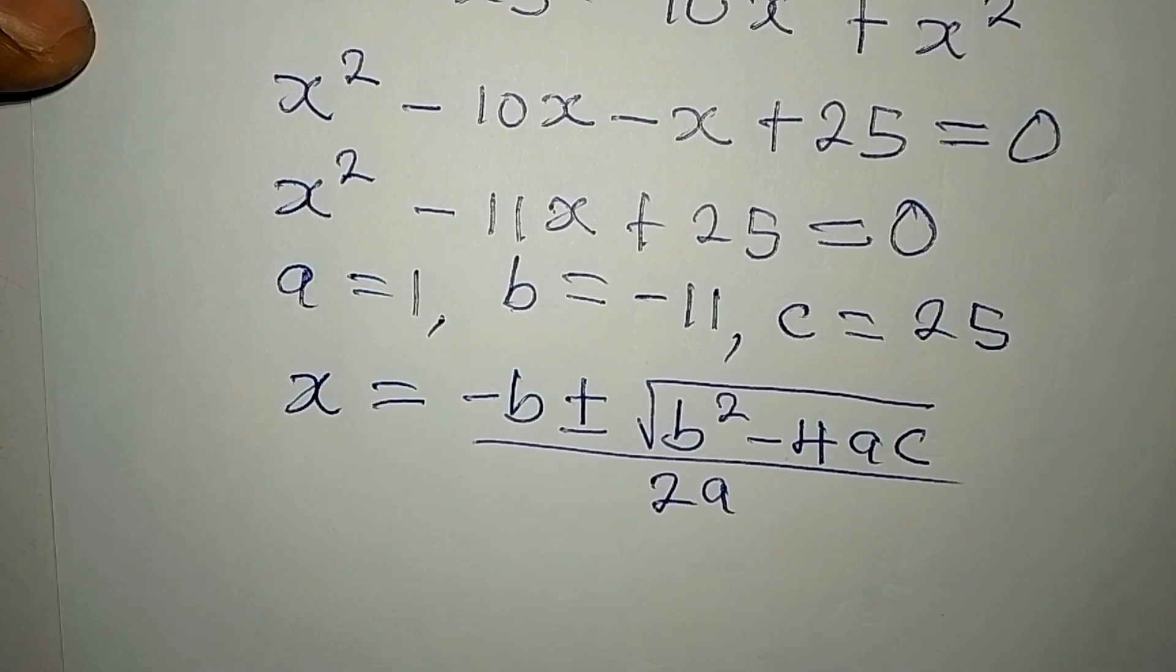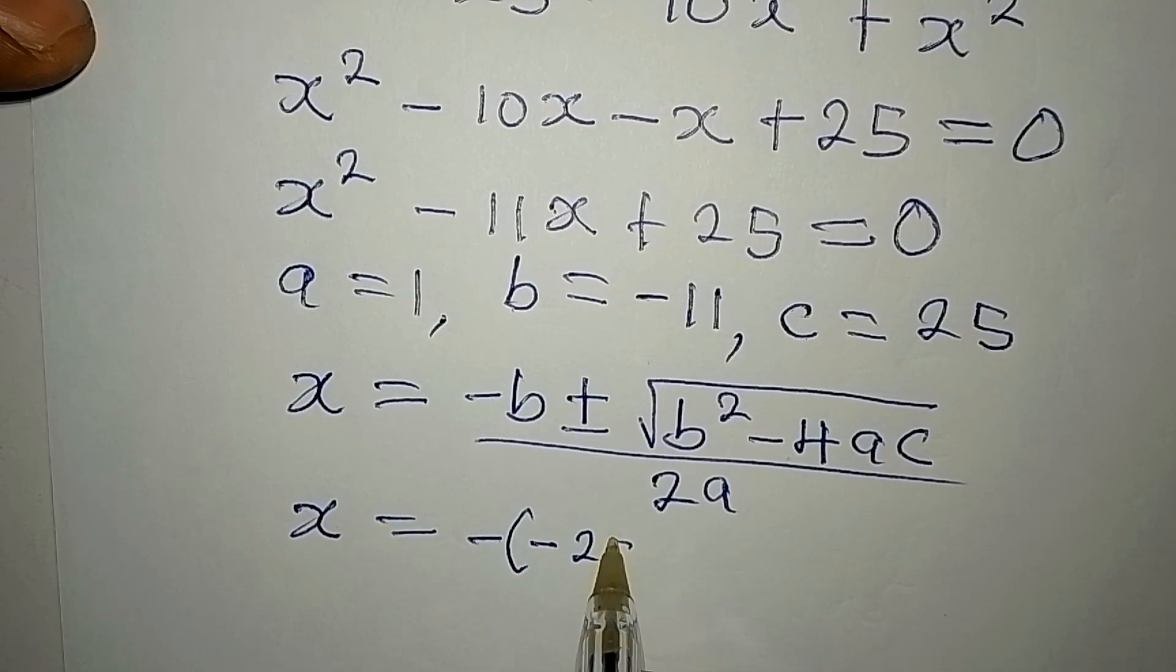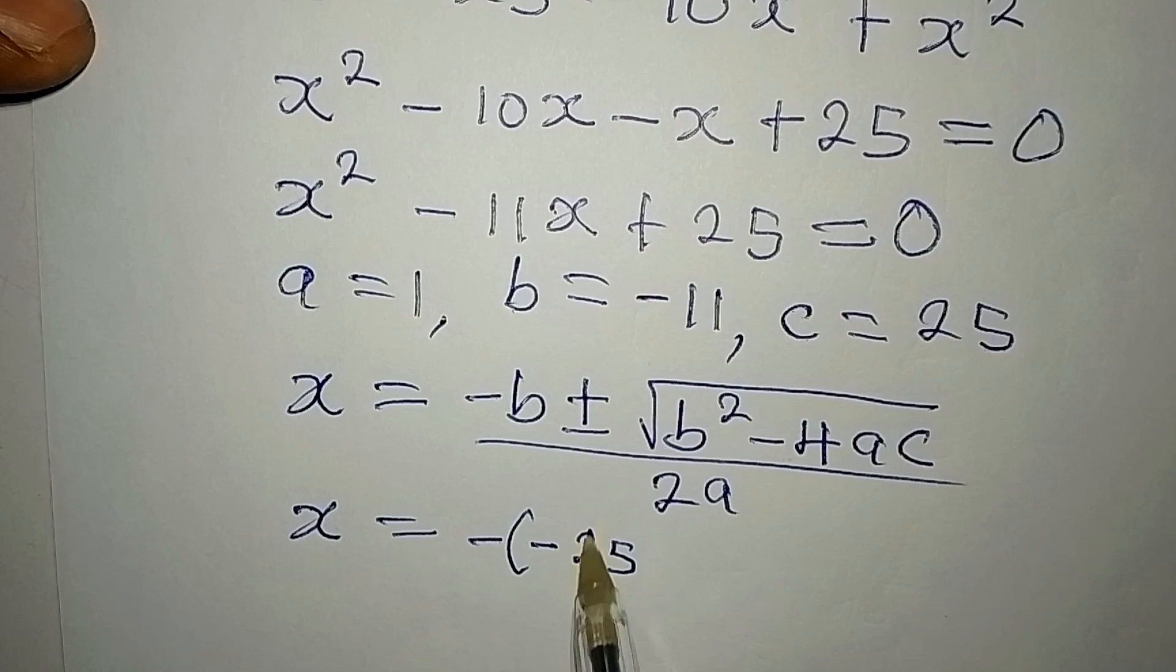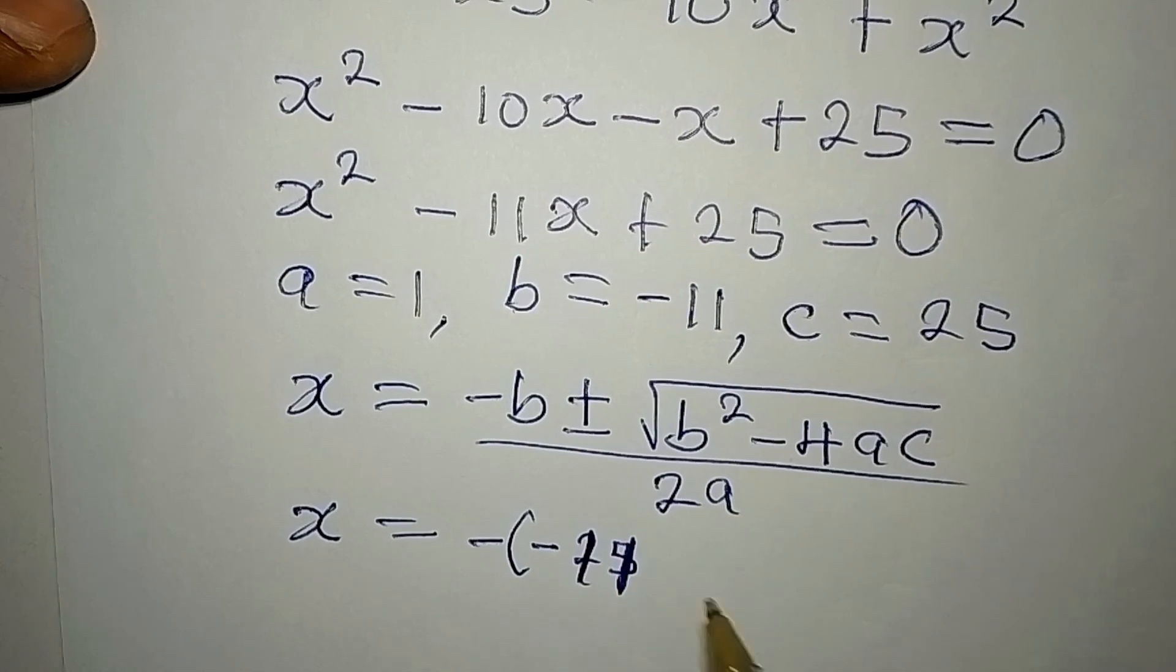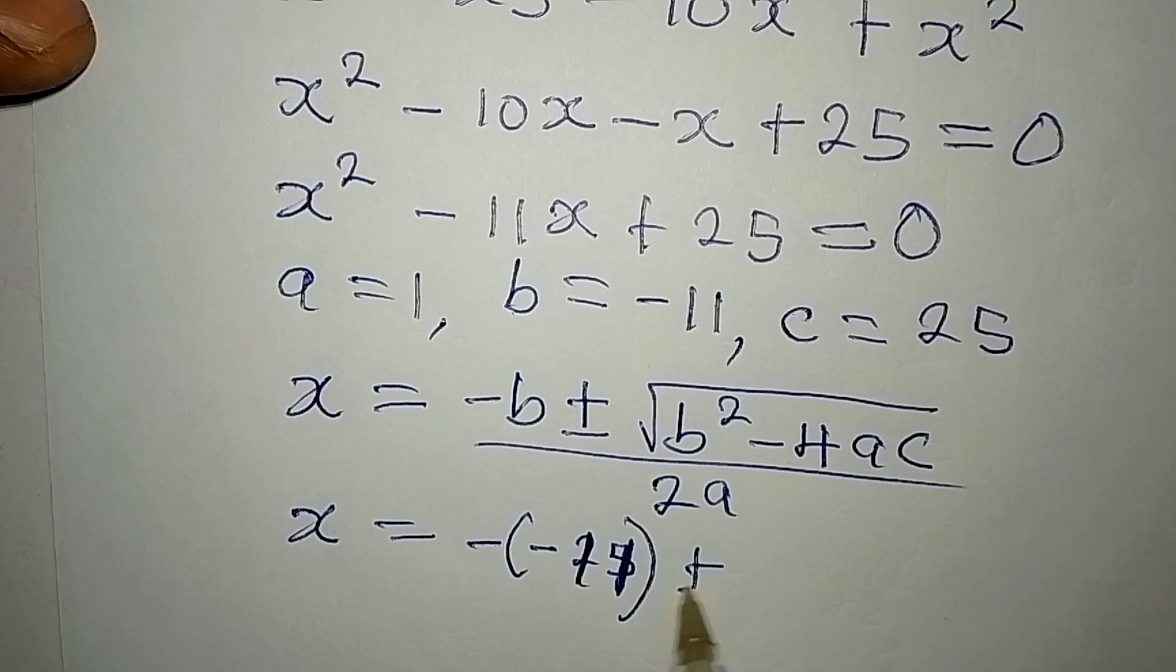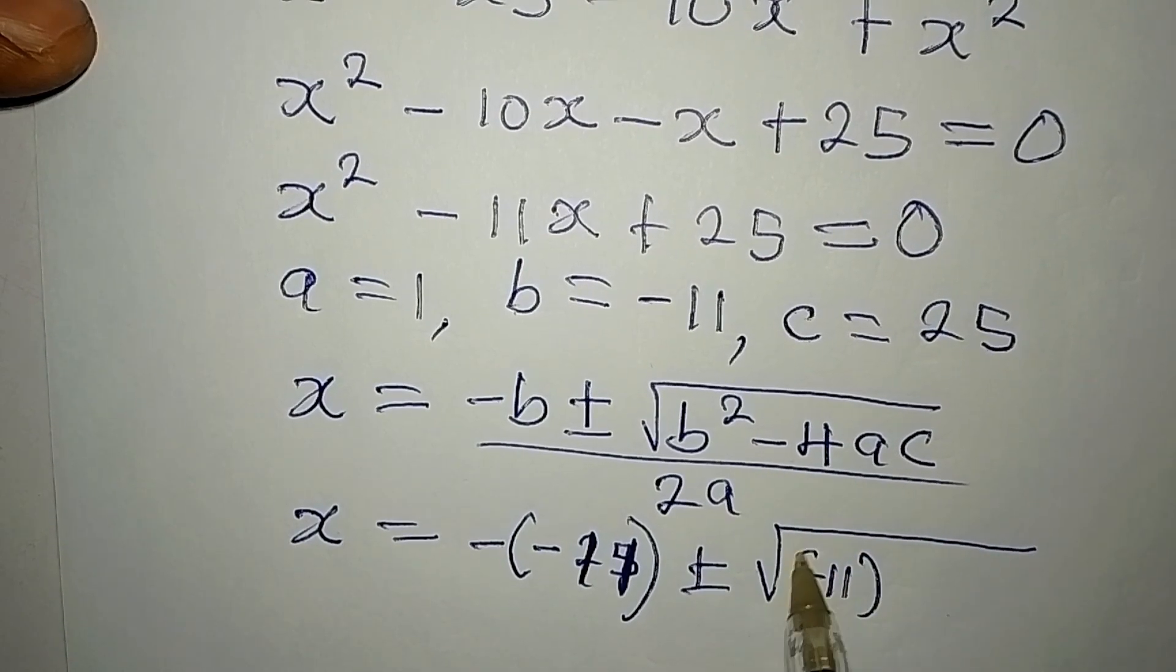So that our x will become negative negative 11, that is for b, then plus or minus we have square root of negative 11 squared